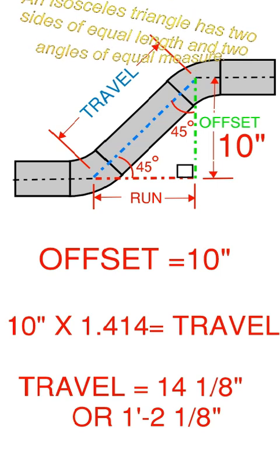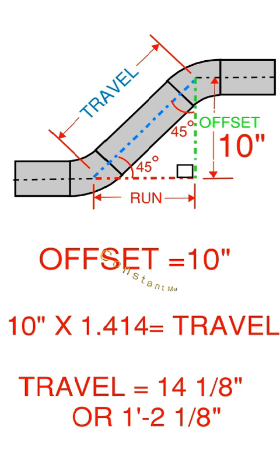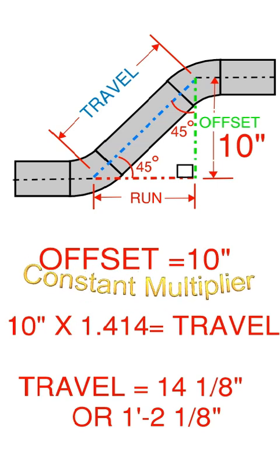In this problem, let's make our offset 10 inches. If our offset is 10 inches, then we take 10 inches and multiply it by our constant multiplier of 1.414, and that will equal your travel. So our travel equals 14⅛ inches.